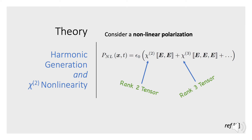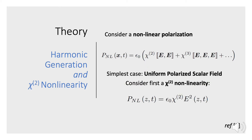Let's look at this in a little more detail. Suppose we have a nonlinear polarization with successively higher-order terms. We have a chi-2 nonlinearity captured by a tensor of rank 2, and a chi-3 nonlinearity by a tensor of rank 3. But in the simplest case, let's look at a chi-2 nonlinearity of a scalar field — uniformly polarized — so it's just a scalar number; the field squared, not a tensor.